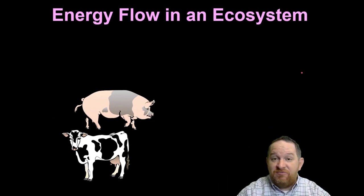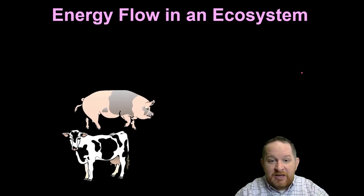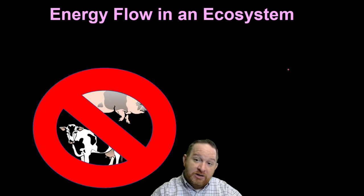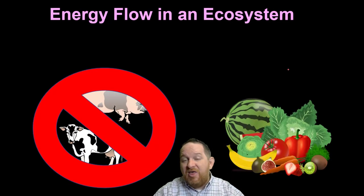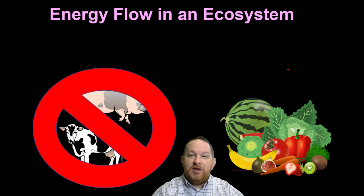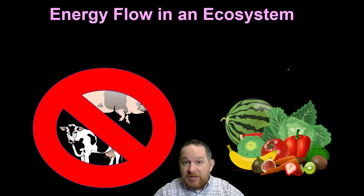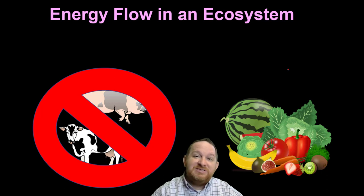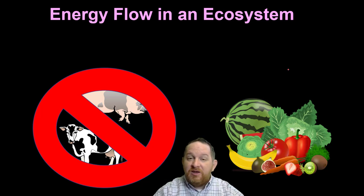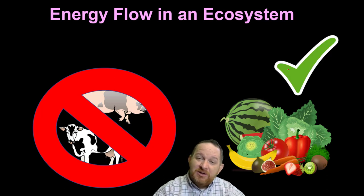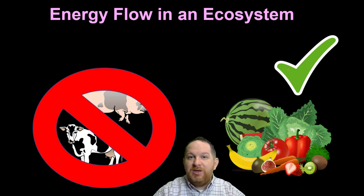Have you ever heard someone say that if we stopped eating meat and all became vegetarians and ate only plants, we could feed everybody on the planet or save the world? Is there any truth to this? What's the science behind it? In this video we're going to explore that, talking about energy flow in an ecosystem and the possibility that we should all become vegetarians.